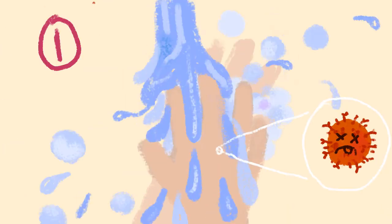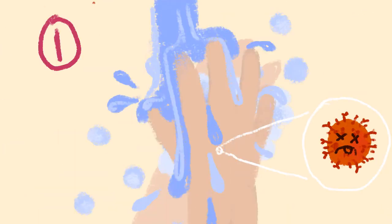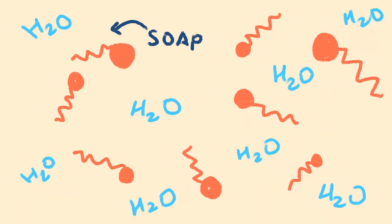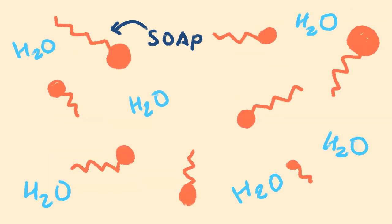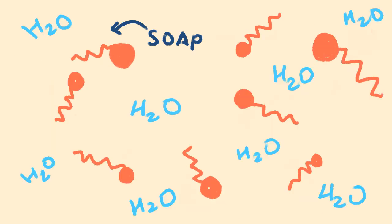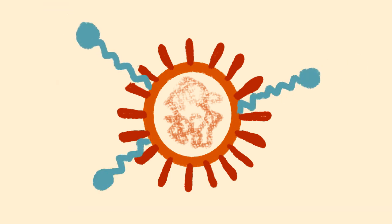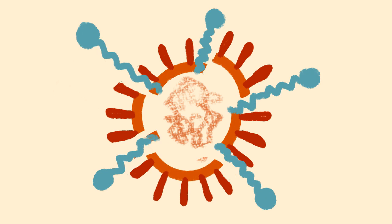Washing hands regularly with soap and water helps you kill the virus that may be present on your hands. When you wash your hands with soap and water, you surround any microorganism on your skin with soap molecules. The hydrophobic tails of the free-floating soap molecules attempt to evade the water. In the process, they wedge themselves into the lipid envelopes of certain microbes and viruses, prying them apart — sort of like crowbars.